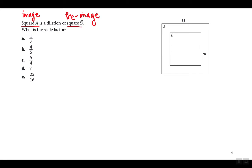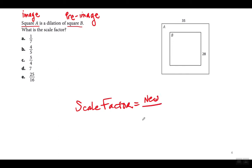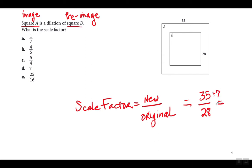If we're making square B bigger, the scale factor has to be bigger than 1, so the correct answer must be one of the bottom answer choices — the first two are less than 1. The formula for scale factor is new on the top and original on the bottom. Starting with square B, the original is 28 and the new is 35. So 35 goes on top and 28 on the bottom. Divide top and bottom by 7, and the scale factor is 5 over 4. The answer is letter C.